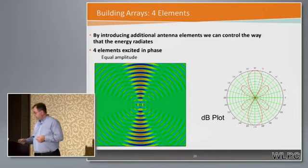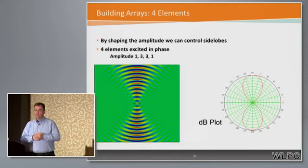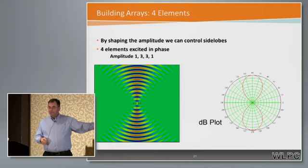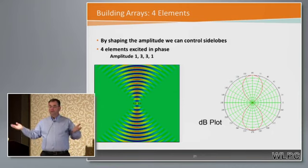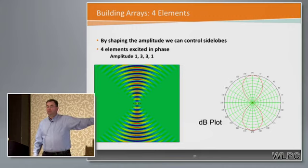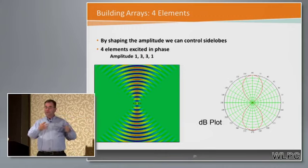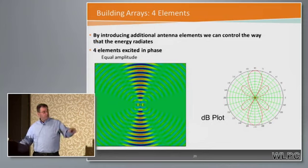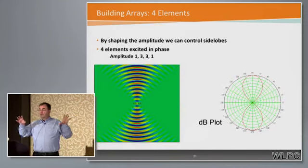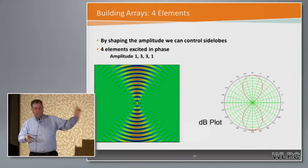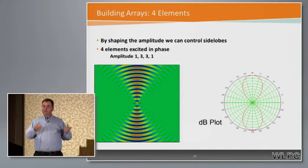What if you don't like those side lobes? There's something called a binomial array. All four elements still run at the same time, but we change the amplitude — instead of 1-1-1-1, the center two are excited more strongly: 1-3-3-1. By altering the amplitude, you can actually eliminate the side lobes. The trade-off is that the main beam is broader because you've spread the energy. That's an example of amplitude-only beamforming.